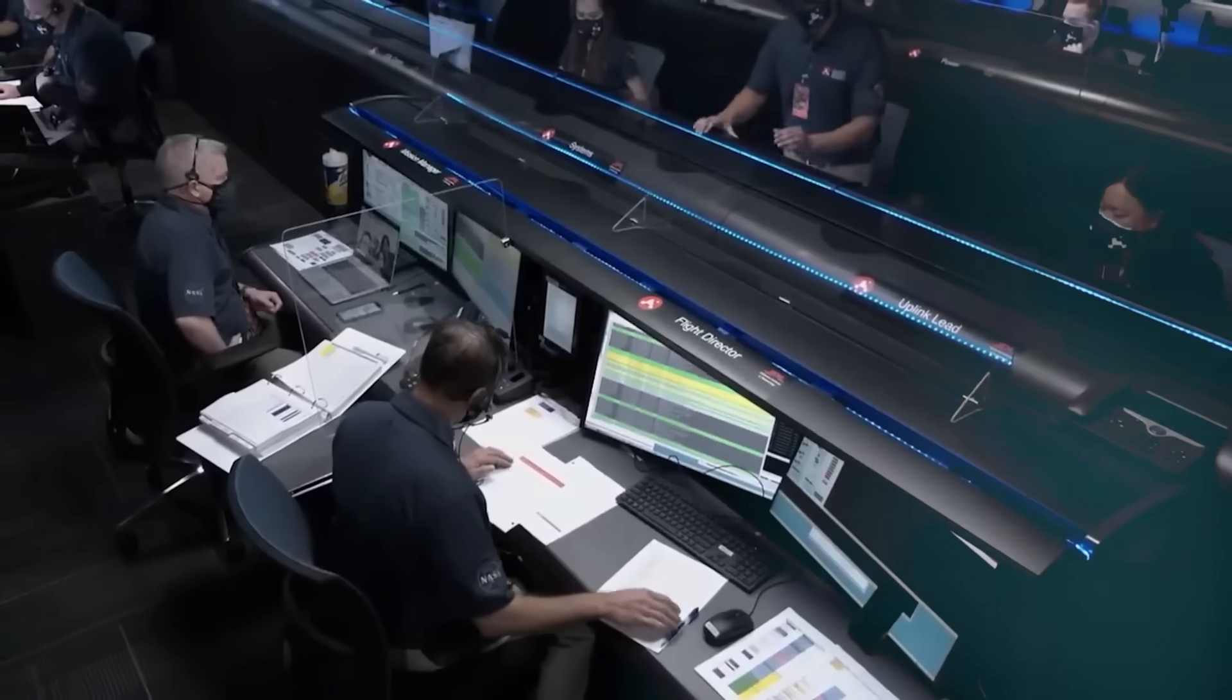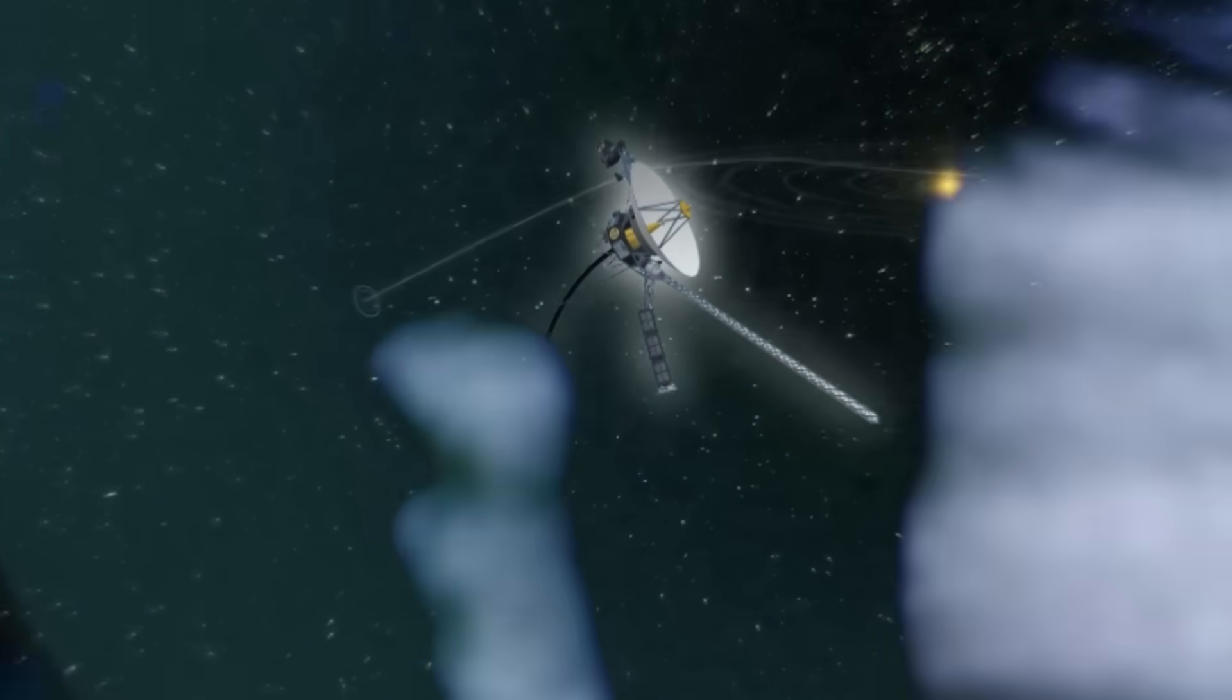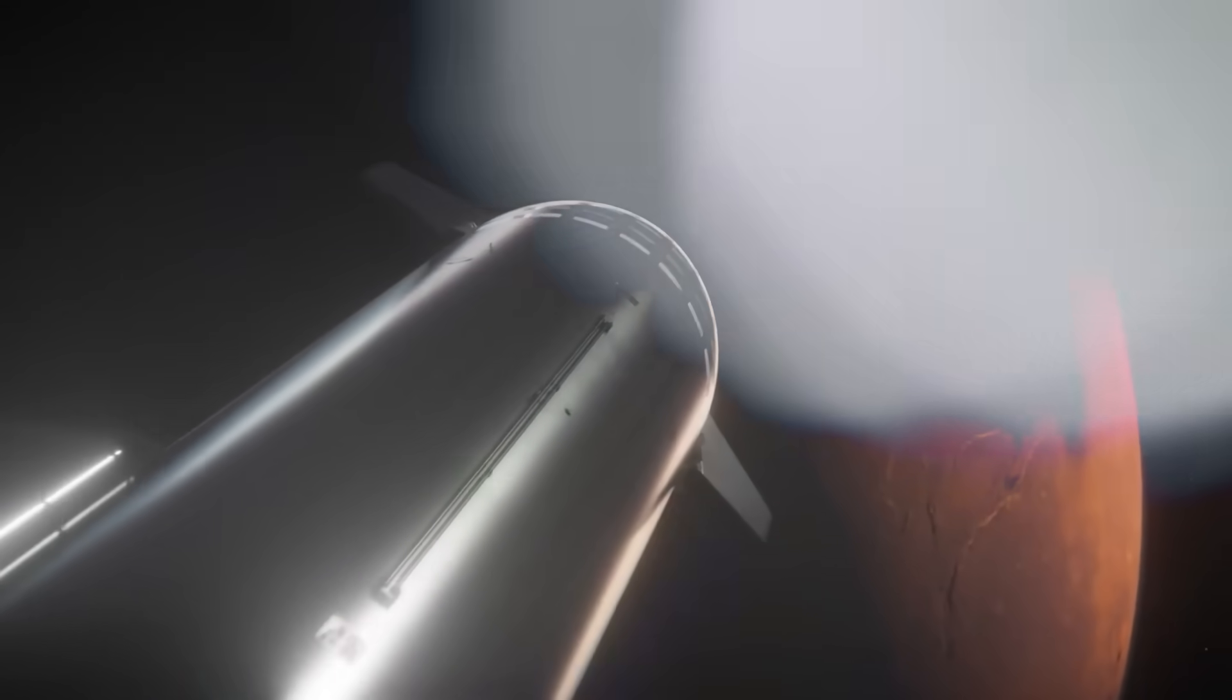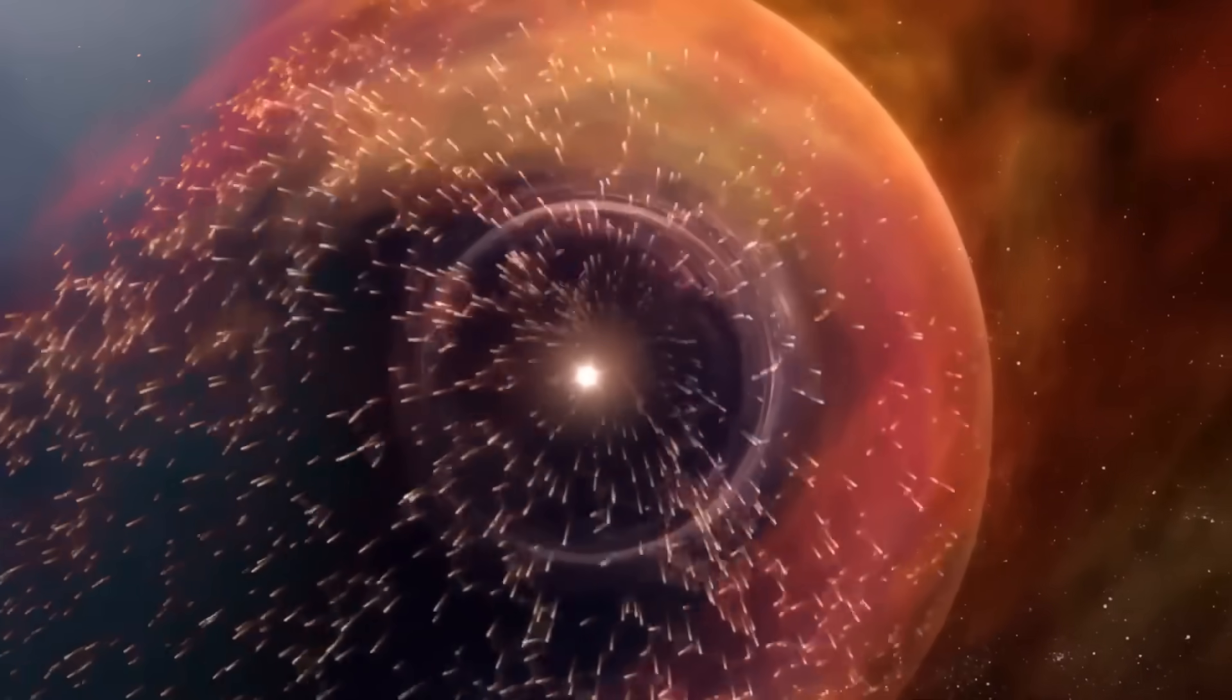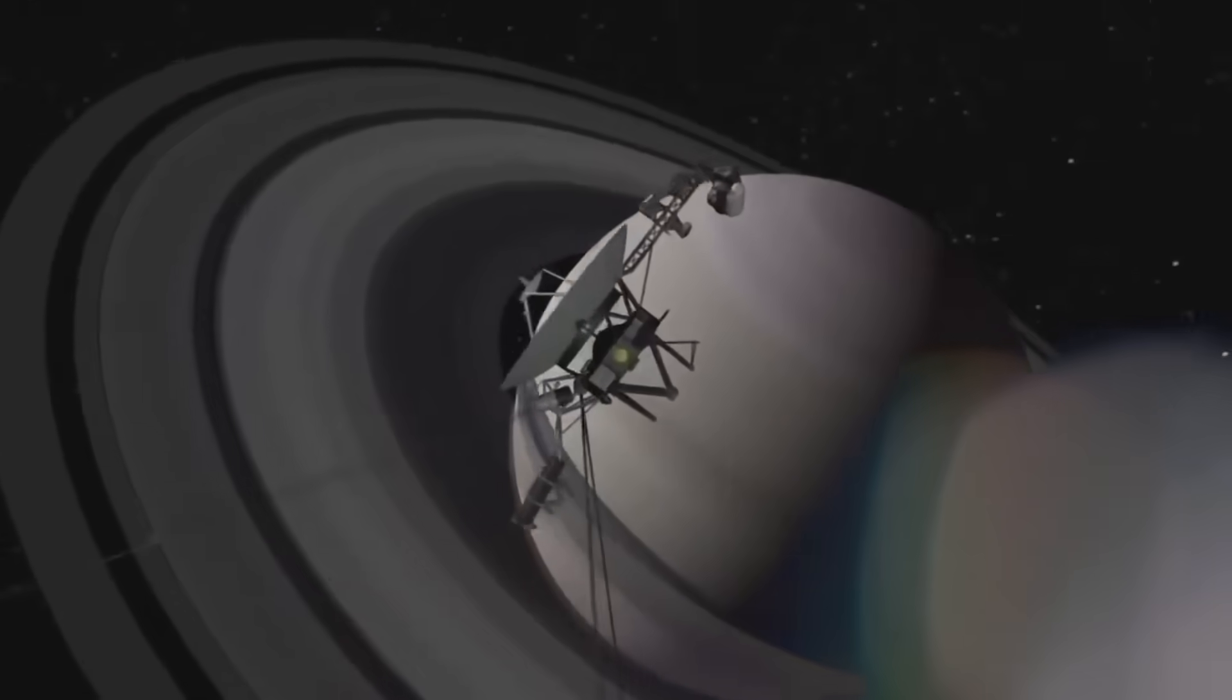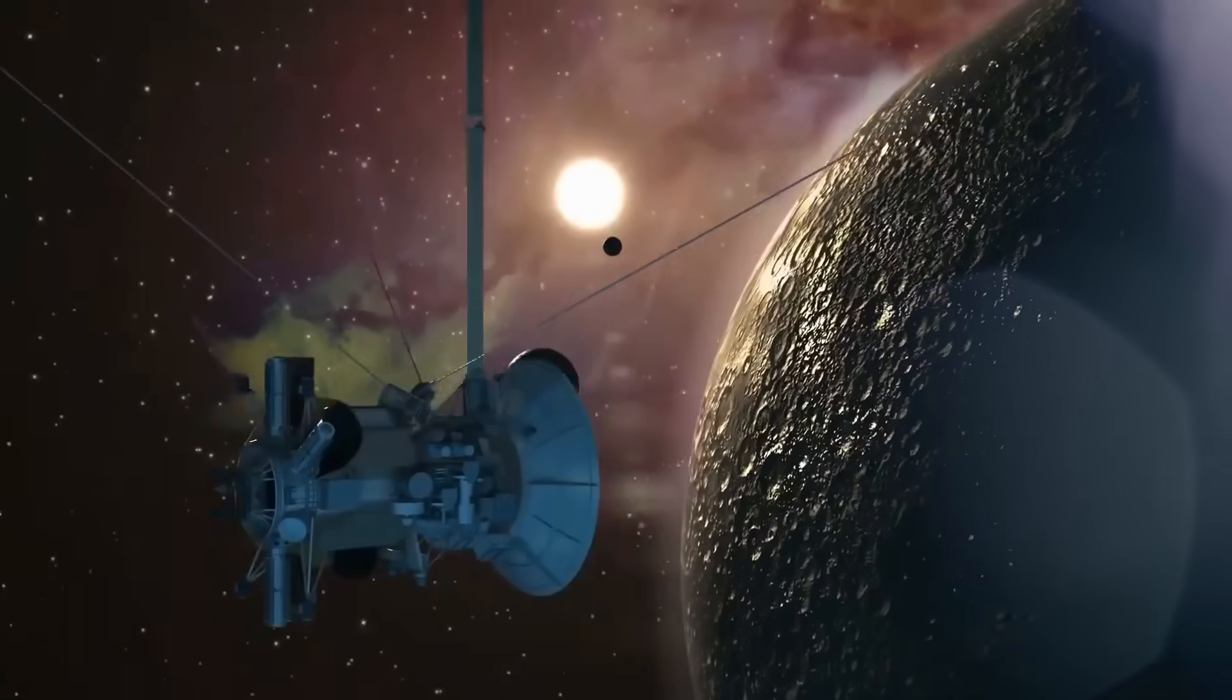For 45 years, Voyager 1 was our silent ambassador to the stars, an aging, drifting fragment of human will wrapped in gold and binary. It carried our sounds, our greetings, and our hope that something out there might one day listen. But we never expected an answer, not like this. Because Voyager hasn't just reached the edge of space. It has pierced something older, stranger, and far more intentional than anyone imagined. A region where time twists, physics trembles, and signals reflect. A place that does not behave like the rest of the cosmos. A place that watches back. And when Voyager sent that distorted signal, that looping cry across the void, it wasn't a malfunction. It was a response. The kind that doesn't need words. The kind that says, we've seen you now.